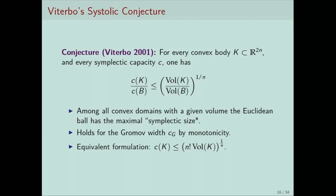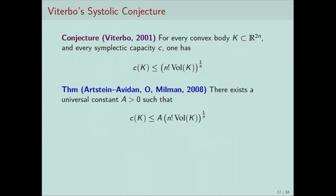It is not hard to check that for the Gromov width — the smallest possible normalized symplectic capacity — the conjecture holds just by monotonicity. But other than this particular example, for all other known capacities we do not know whether the conjecture holds. We know again that it holds asymptotically — there exists a universal constant such that this inequality holds. This is a joint work with Shiri Artstein-Avidan and Vitali Milman from Tel Aviv University.